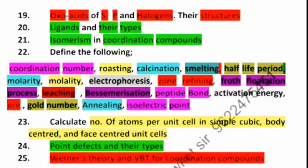Next important is the oxo acids of sulfur and phosphorus, and also halogens. Sulfur and phosphorus structures are asked. Next is ligands and their types from monodentate to polydentate and ambidentate ligands, and isomerization in coordination compounds.